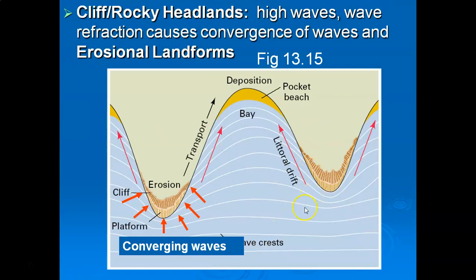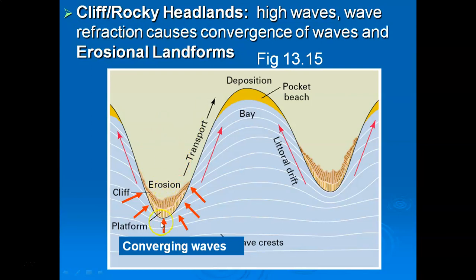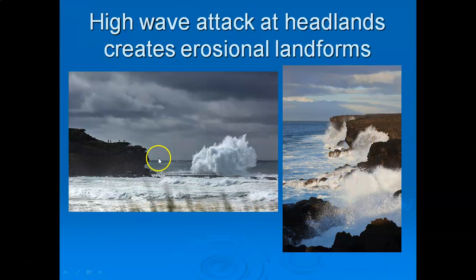Wave refraction has major ramifications for erosion and deposition along coastlines. Along rocky headland coasts, if you look at where the waves break and hit, you've got waves actually converging at the headland. When you have converging waves, you get higher wave heights, crashing waves, and a whole variety of erosional landforms. Here are some examples of the crashing waves that create these erosional landforms.